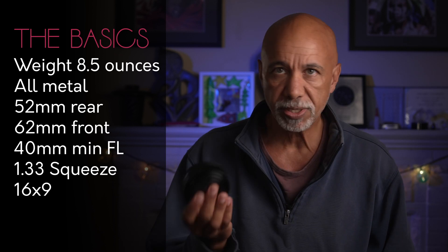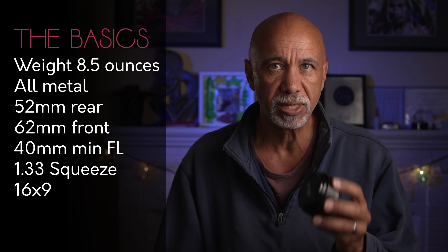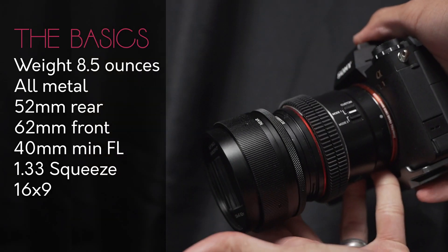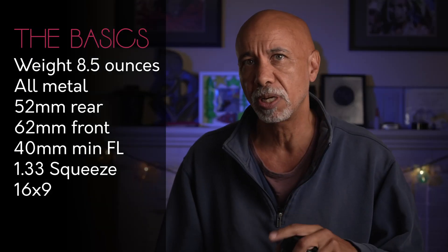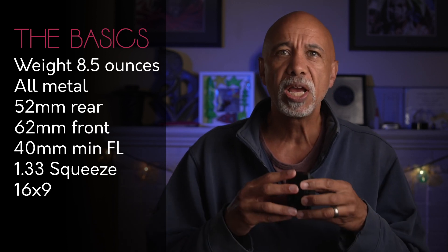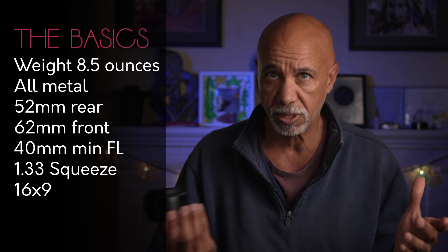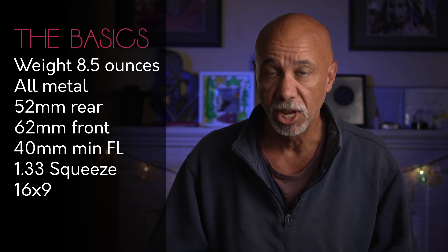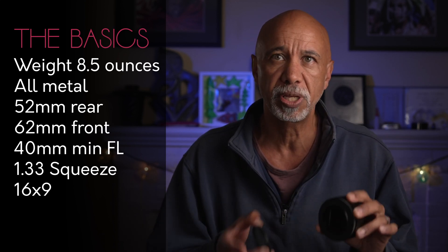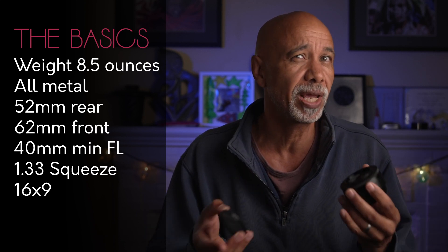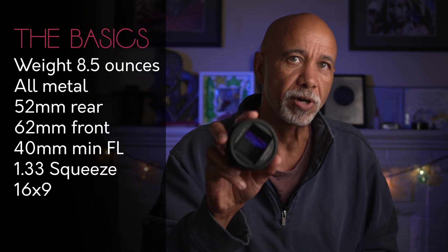First, the basics. It weighs eight and a half ounces — roughly half a pound. It's all metal, and in the hand it's got a little heft to it, but it's smaller and lighter than many of the lenses it will go on. Once on, however, you do have a considerable lens adapter setup in terms of weight and size. The focus ring is buttery smooth. Overall, the build quality is excellent. It's an adapter, not a lens. It has a 52mm thread for the taking lens. You can use step-up and step-down filters to attach 49–58mm lenses, but beyond that it's likely to vignette.